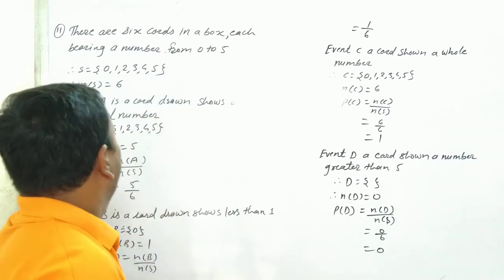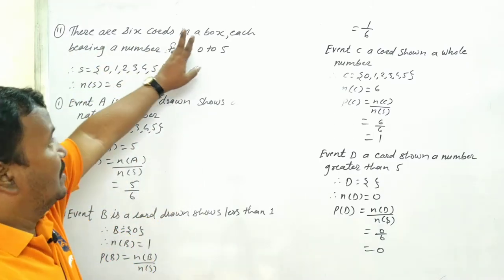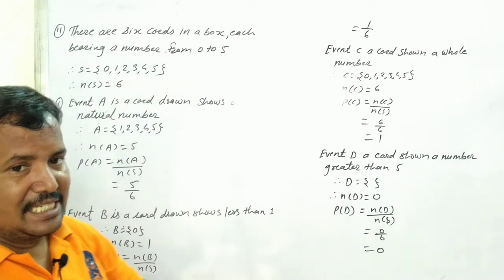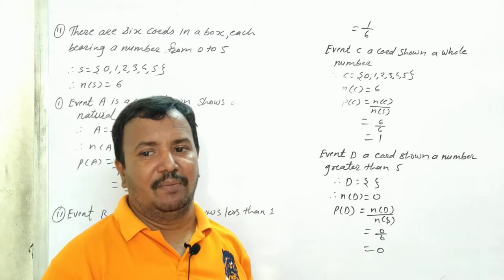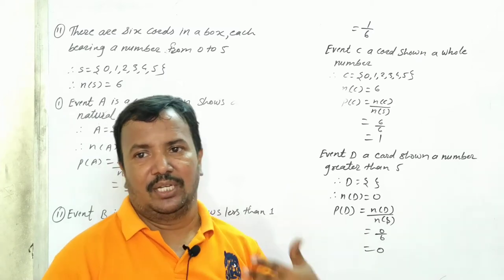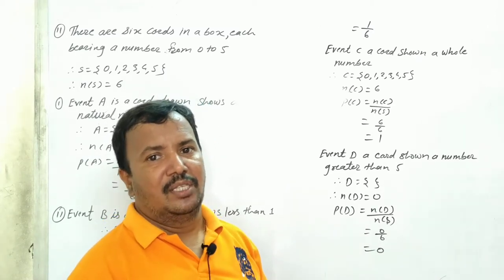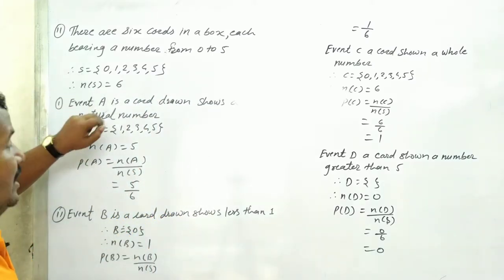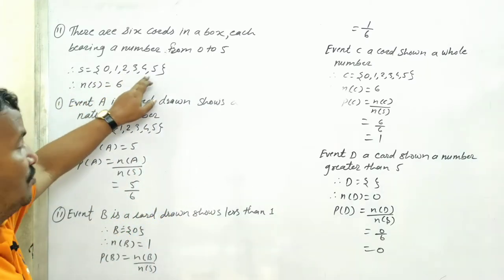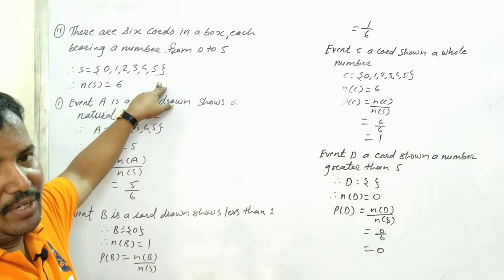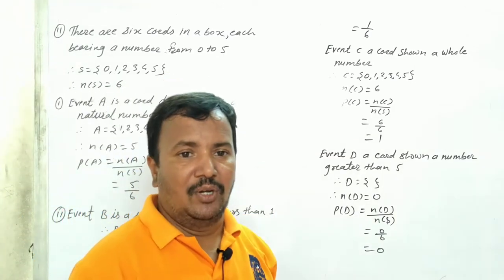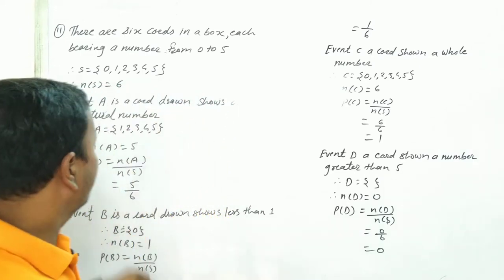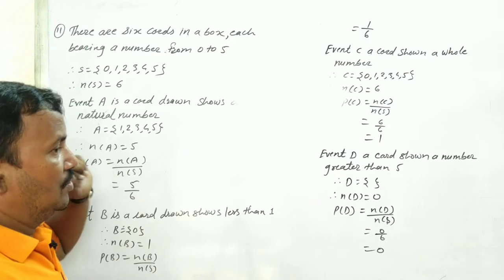Now pay attention. There are six cards in a box, each bearing a number from 0 to 5. So S is equal to {0, 1, 2, 3, 4, 5}. Number of S is equal to 6.